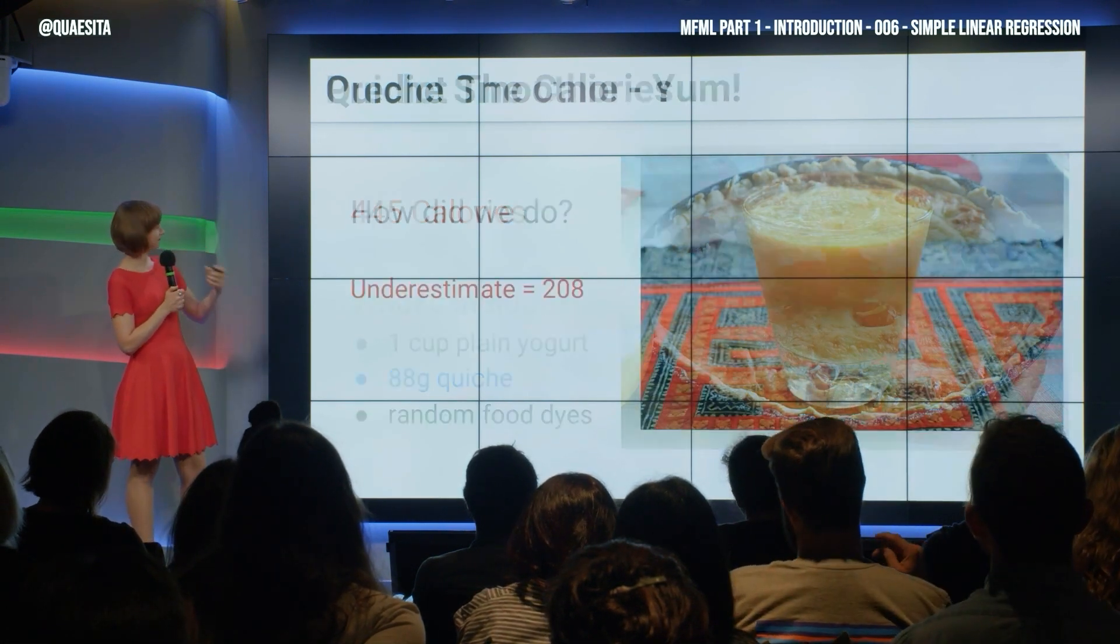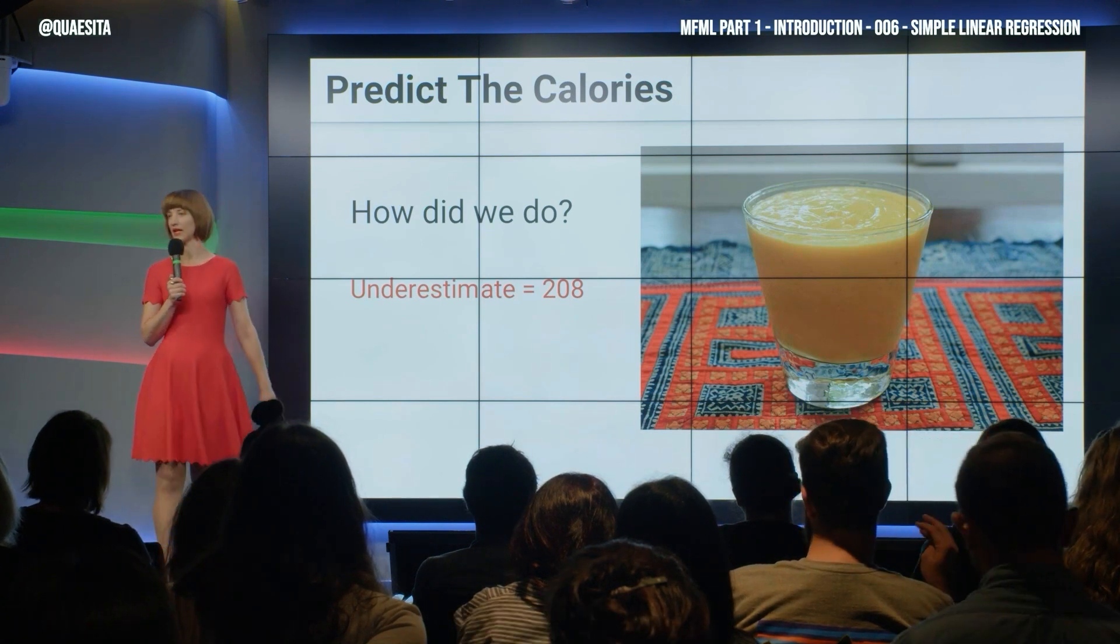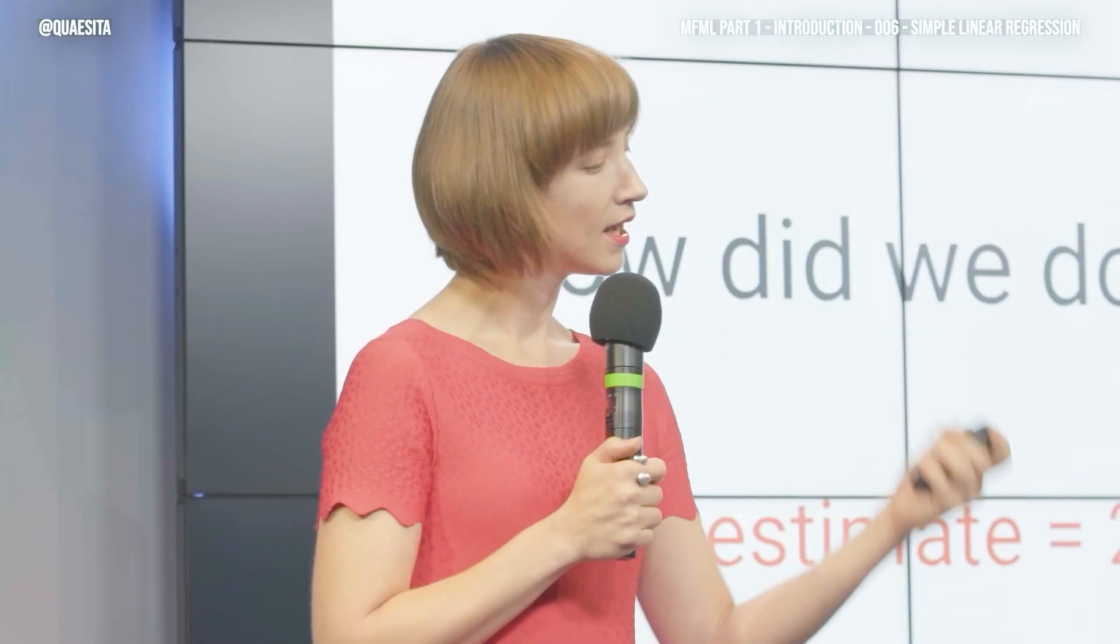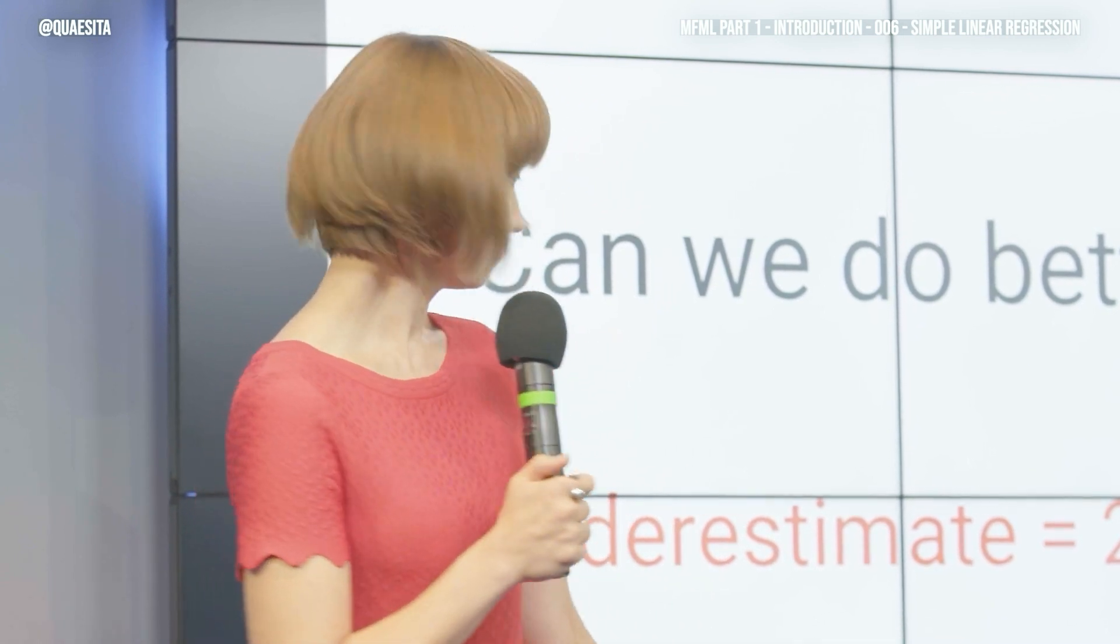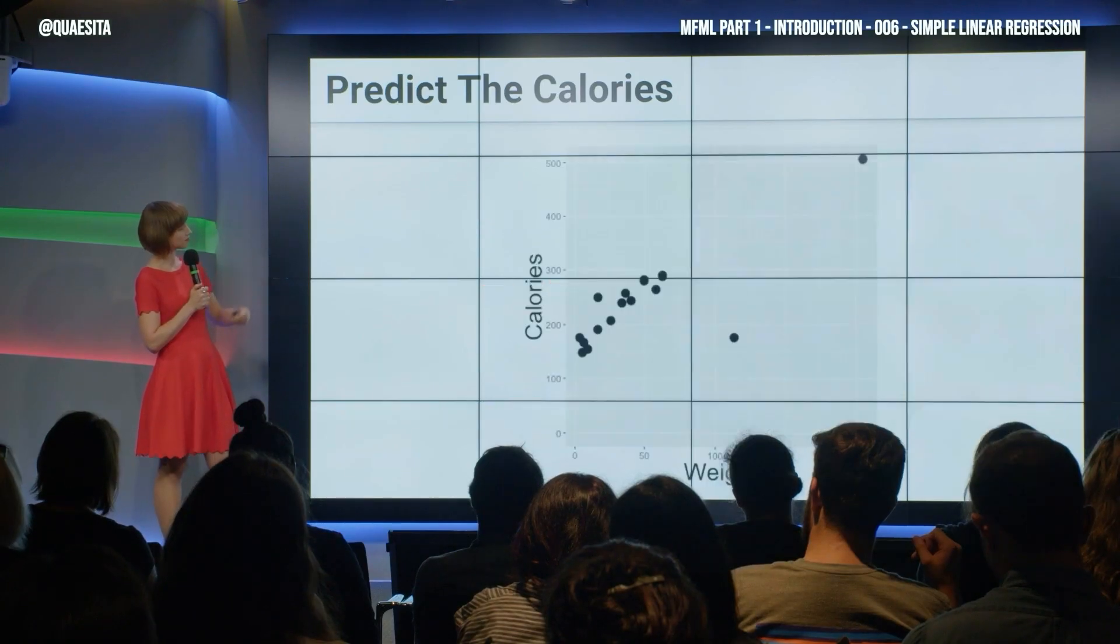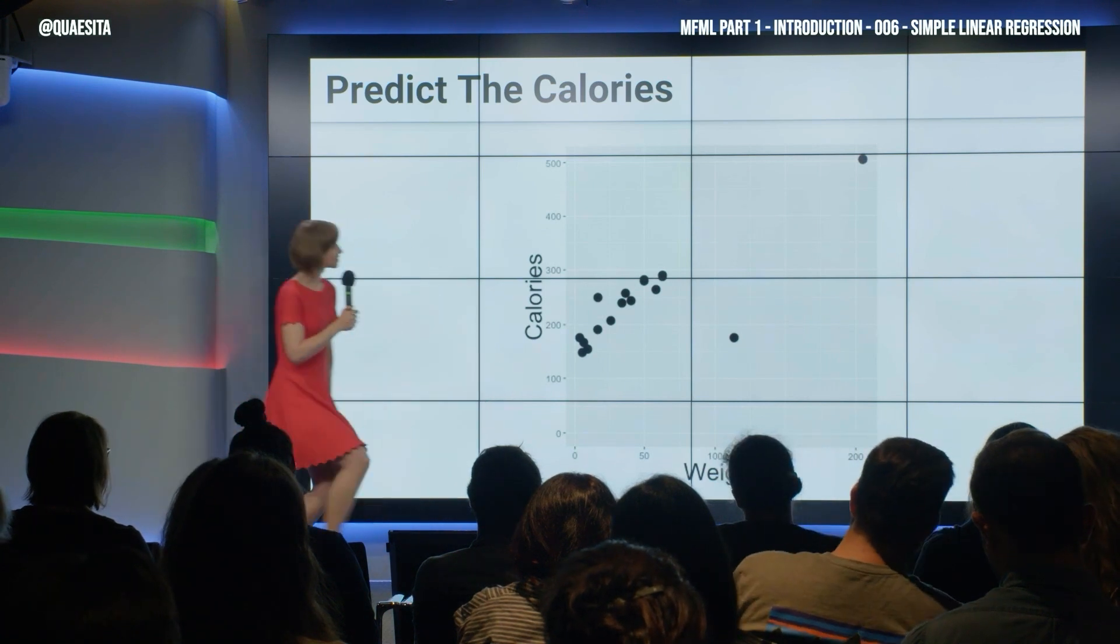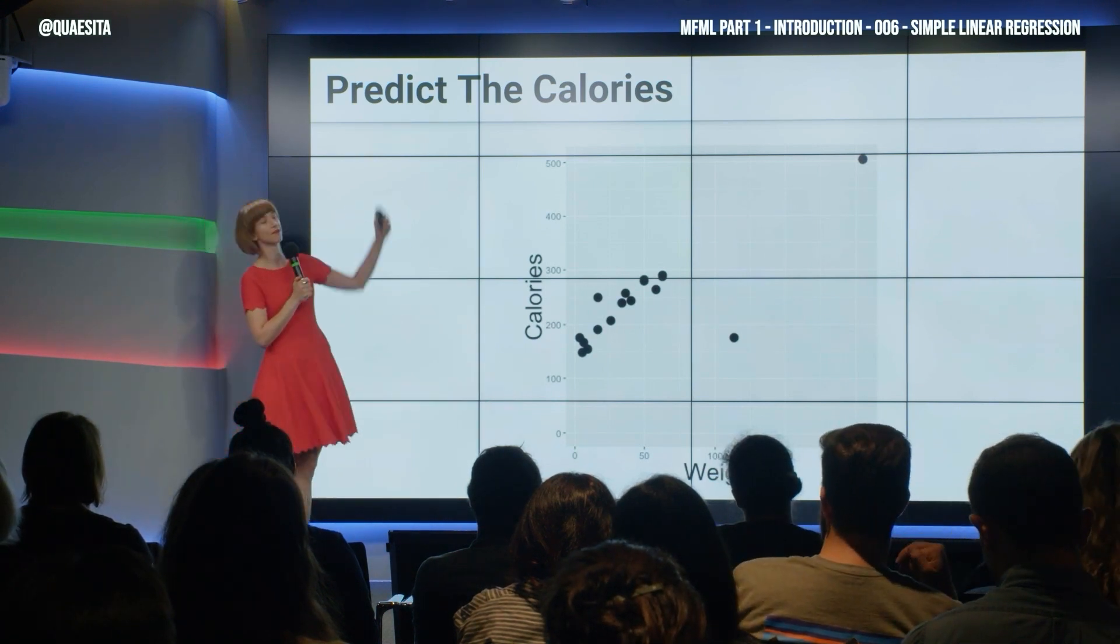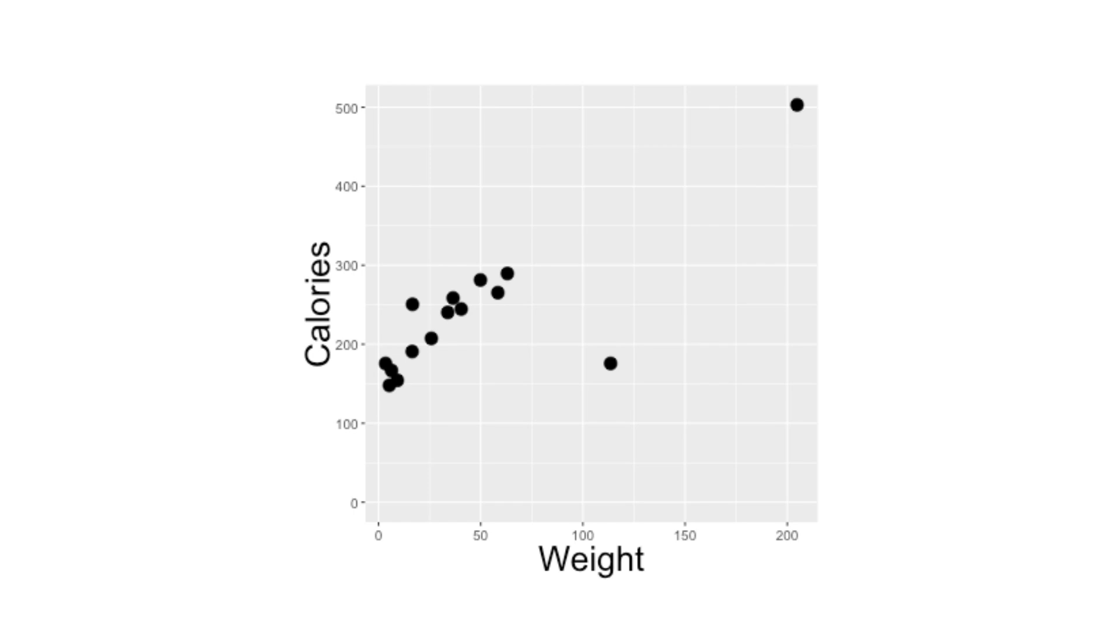So, how did we do? We had an underestimate of 208 calories with that strategy. And can we do better? Well, maybe it would help to have the weight of the secret ingredient. So, what we'll do as analysts is we'll make a little plot and we'll have the weight from 0 to 200 grams on the x-axis and calories from 0 to 500 on the y-axis. And as we look at this, we ask ourselves, is there anything going on or is weight completely useless here? What do you say? Something to it. And since there's something to it, maybe we'll go ahead and we'll try it out, shall we?